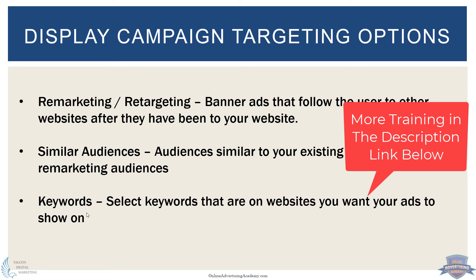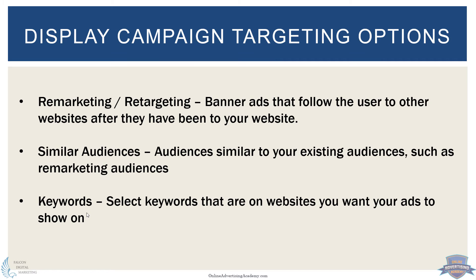You can also target based on the keywords that are on a website — you select keywords that are on the websites you want your ads to show on. So if there's a particular product or service someone's researching, if they're on a blog, news website, or forum discussing whatever that keyword is, your banner ad will pop up right next to it. It's a good time to reach people when they're researching outside of a search engine, especially for big purchases like a car or house, and as long as the website allows ads, if the keywords are on that page, your banner ad could appear right there next to a relevant article they're reading.